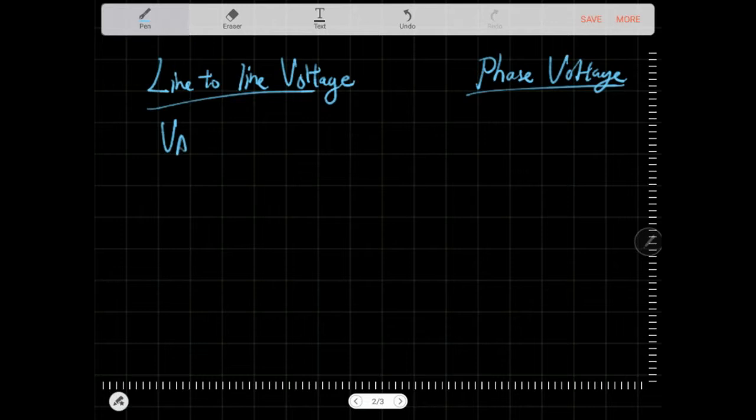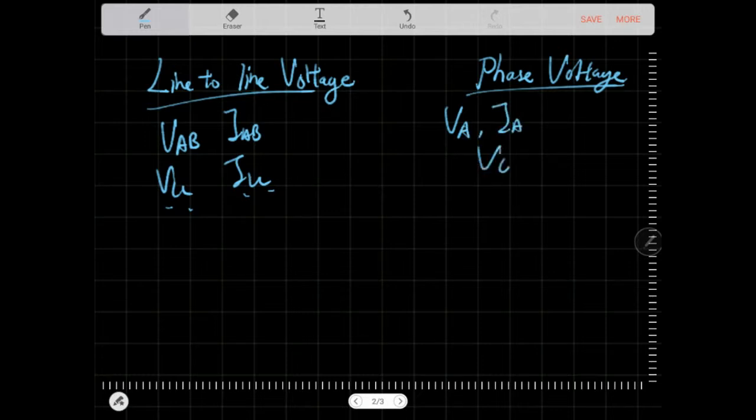So here's to clear things up. Line-to-line is normally denoted as two terms: VAB, IAB, or V line-to-line, I line-to-line. So there are usually two terms about it. Our phase voltage or phase current is usually just VA, IA, or just V phase, I phase. This is usually how they denote it. There's only just one term.